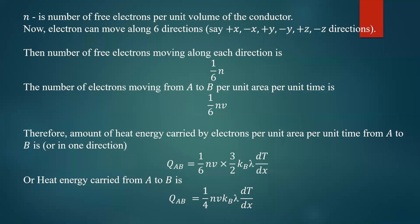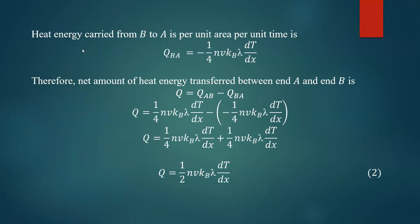There is an equal probability of electrons moving from B to A. Since V is the average velocity, the heat energy carried from B to A per unit area per unit time, Q_BA, is equal to the same magnitude but with a negative sign — that is, minus (1/4) N V K_B lambda times dT/dx.